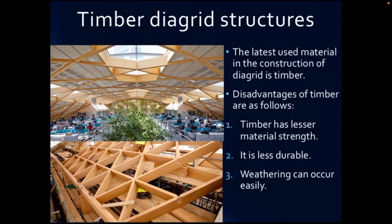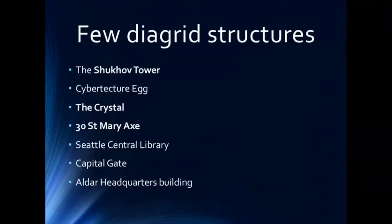Timber is the least used material in the construction of diagrid structures and has more disadvantages than advantages. The main advantages of timber are that sections are easily available in any shape and size, and the installation cost is low. However, the disadvantages include less material strength, lower durability, and susceptibility to weathering.